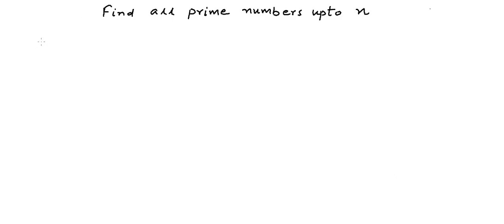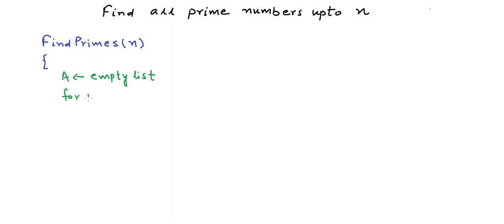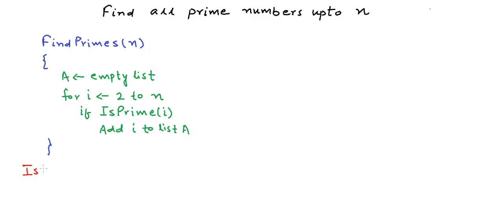We want to write a method, say findPrimes, that should take an argument n and give me all the prime numbers till n. We can do so using the trial division method. We start with an empty list a, and for all i from 2 to n, if i is prime — determined by calling a method isPrime that verifies primality using trial division — we add i to list a.